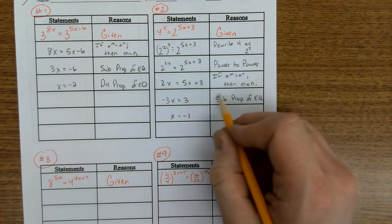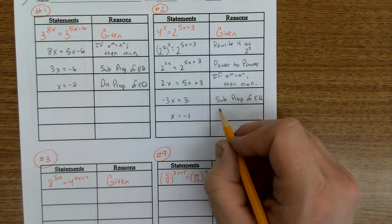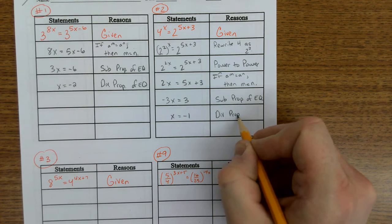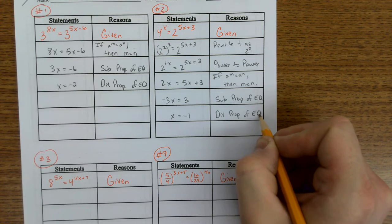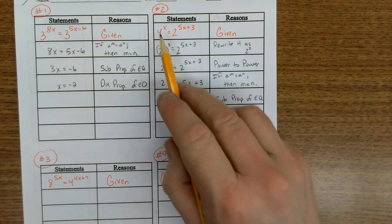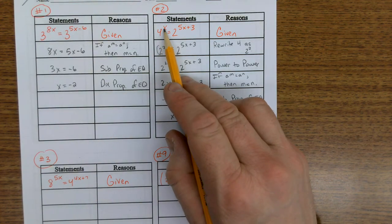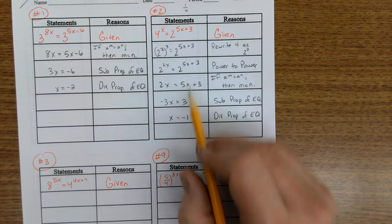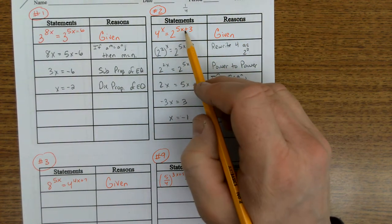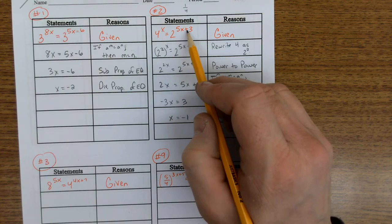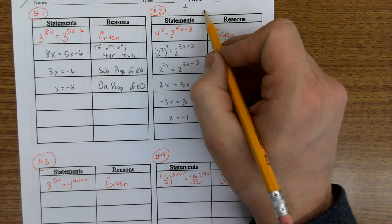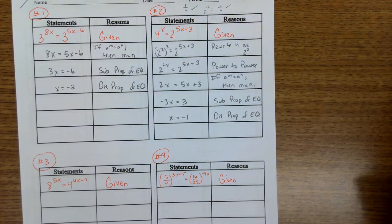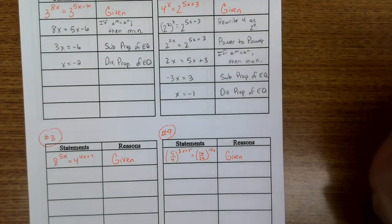That's the division property of equality. And plug that back in again. 4 to the negative 1 is 1 fourth. And if I plug negative 1 over here, that would be negative 5 plus 2, which would be 2 to the negative 2. And 2 to the negative 2 is 1 fourth. So everything checks out. Always want to check them if you can.